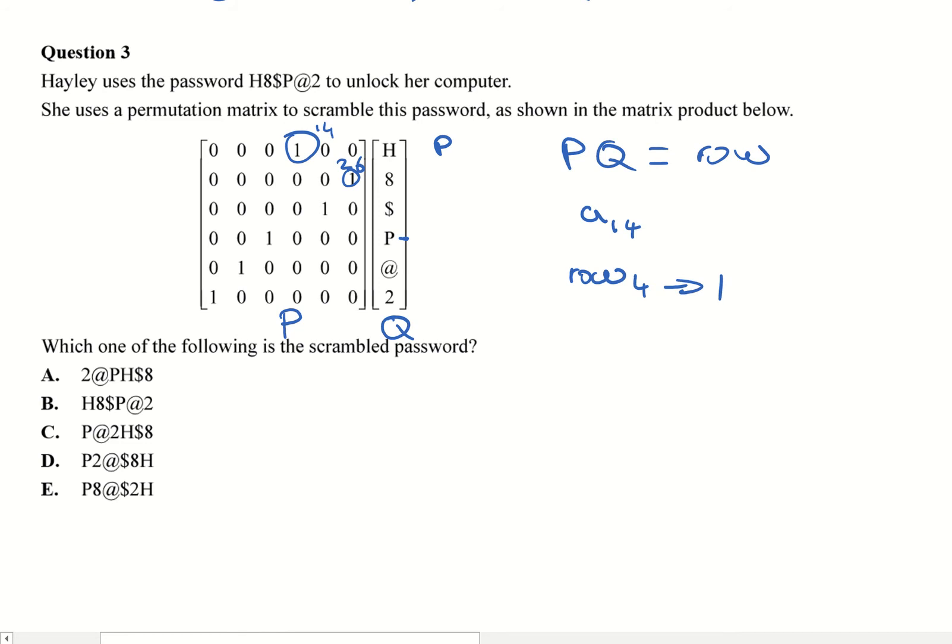So 2,6 would give me, so that means if I've got 2,6, it means 6 is going to 2. So 6 down here, the number 2, is going to row 2. And at the moment, so far, I can get rid of that one, that one, and that one. And that one, at the moment, I've actually got my answer D from that quickly.